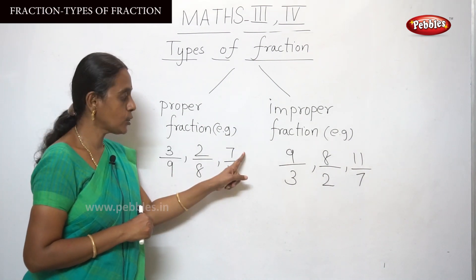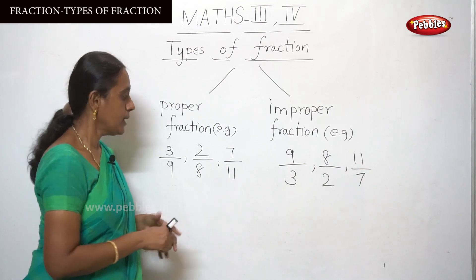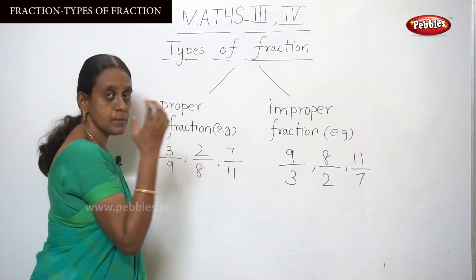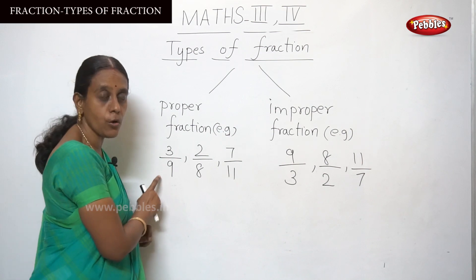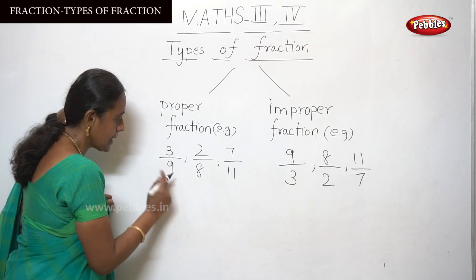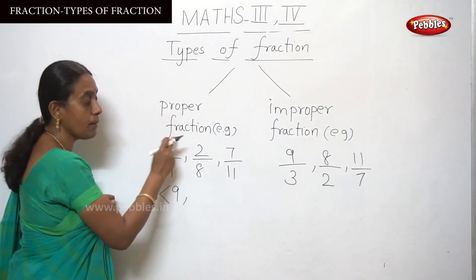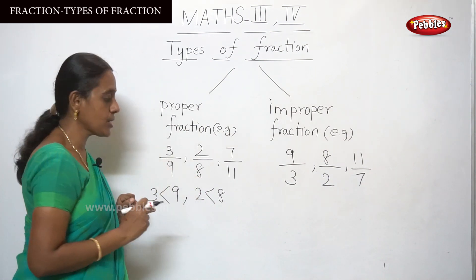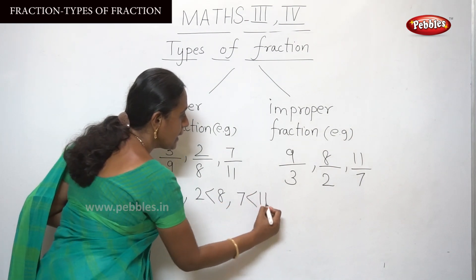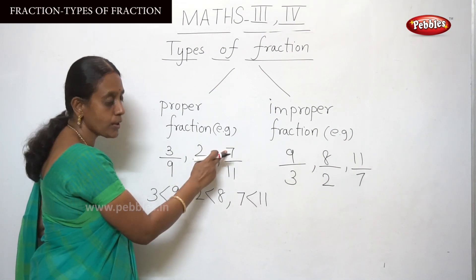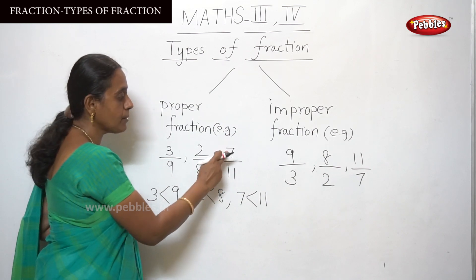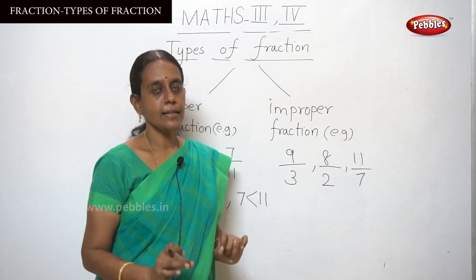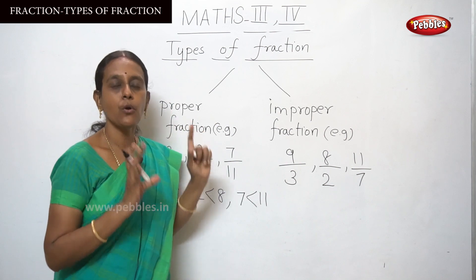The top number is the numerator and the bottom number is the denominator. In 3 by 9, 2 by 8, and 7 by 11, all the numerator numbers are lesser than the denominator. Here 3 is lesser than 9, so this is a proper fraction. 2 is lesser than 8, so 2 by 8 is also a proper fraction. And 7 is lesser than 11, so 7 by 11 is also a proper fraction. If the numerator is lesser than the denominator, the fraction is called a proper fraction.